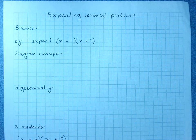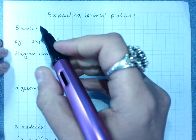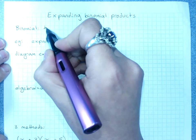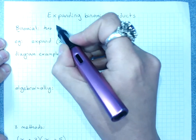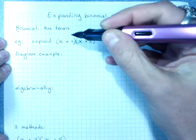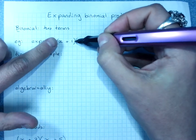Expanding binomial products. A binomial has two terms. So x plus 1 is a binomial.